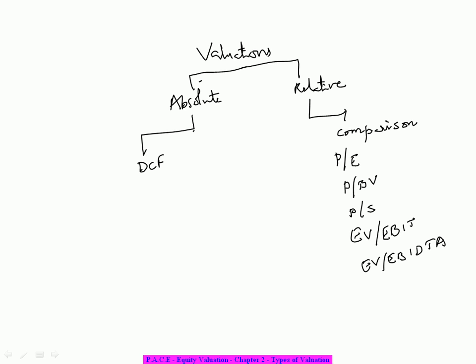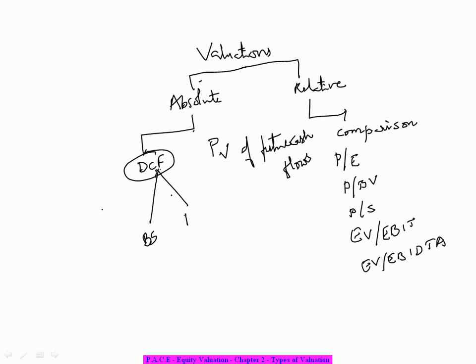Whereas in case of absolute, as the word itself is saying, we will use the discounting of the cash flows. Discounting is nothing but finding the present value of future cash flows. So to arrive at the cash flow, I typically require the balance sheet and the P&L statement.